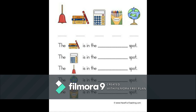Yes, the book is in the second spot. Next, the calculator is in — very good — the third spot. The bell is in the first spot. The globe is in the fifth spot — yes, it is in fifth spot. The colors is in the fourth spot — very nice, fourth spot.